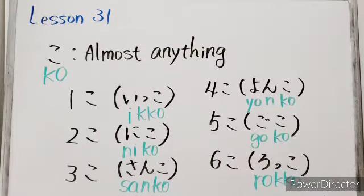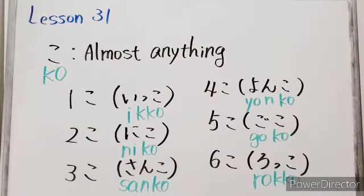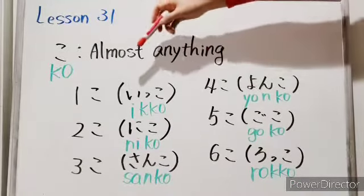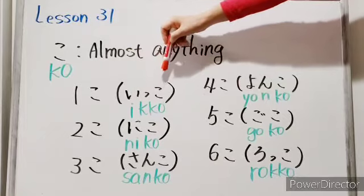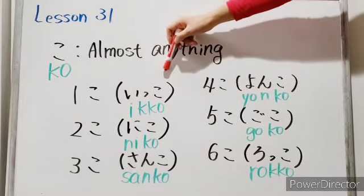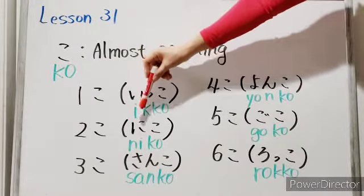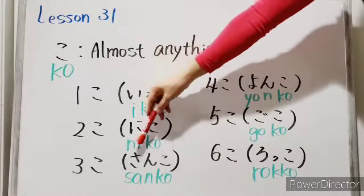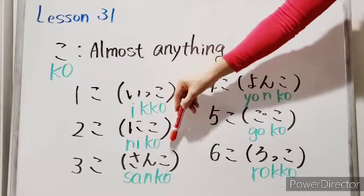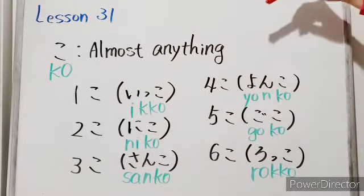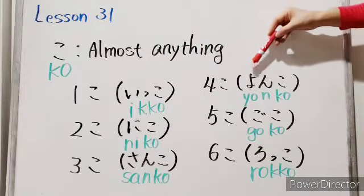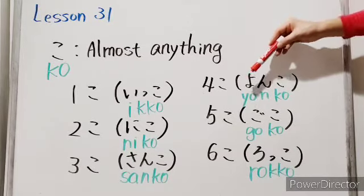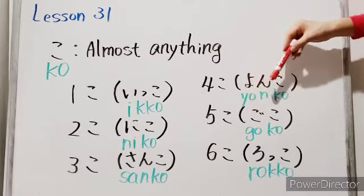Let's take a look at it and practice together. One — ikko. Two — niko. Three — sanko. Four — yonko. Five — goko.